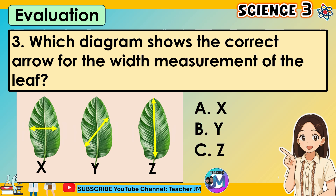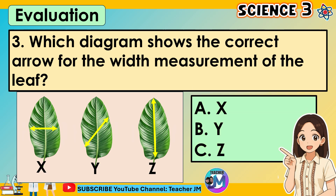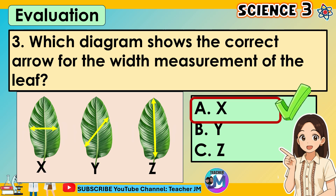Question 3: Which diagram shows the correct arrow for the width measurement of the leaf? A. X. B. Y. C. Z. The correct answer is letter A.